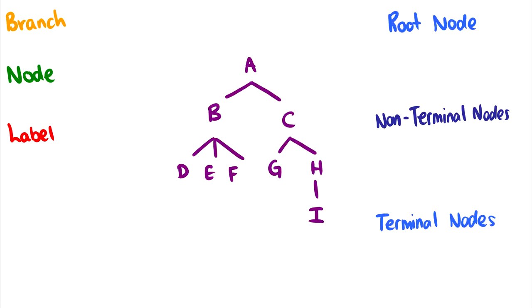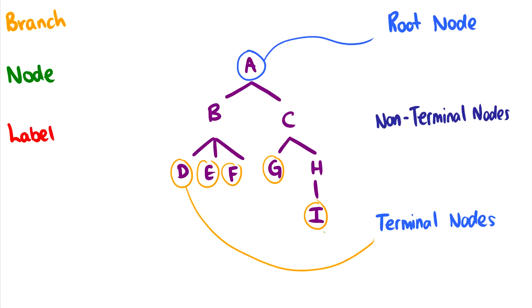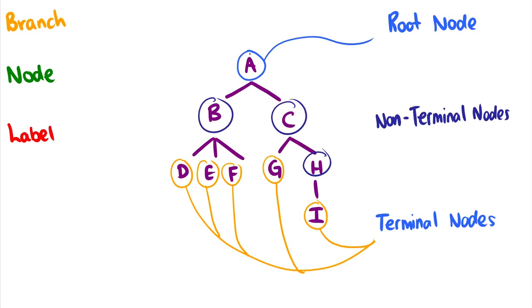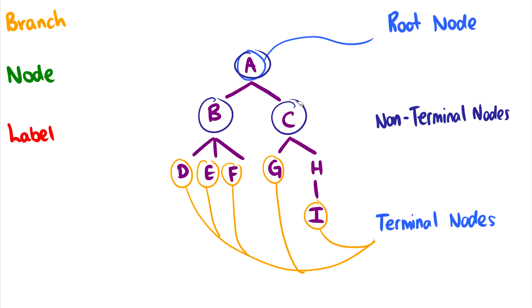The root node is the top of our tree. Terminal nodes are the nodes at the very bottom — at the end of the branches. D, E, F, G, and I are all terminal nodes. Non-terminal nodes are everything else, including the root node. Terminal nodes are things at the very bottom with nothing below them; nodes are just the general points on the graph; and non-terminal nodes are things that are not at the bottom.